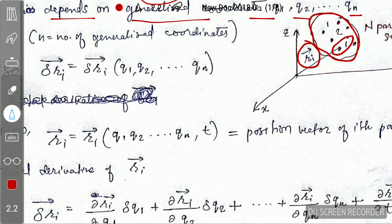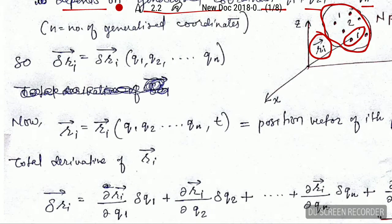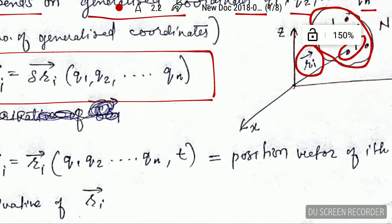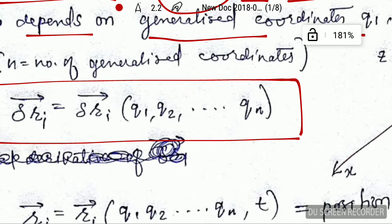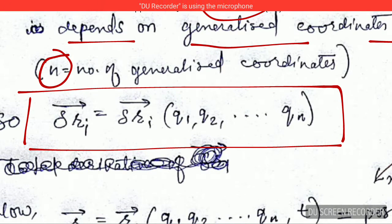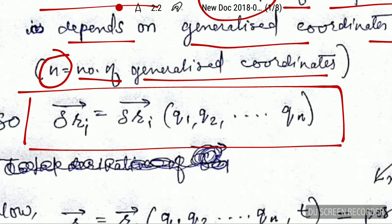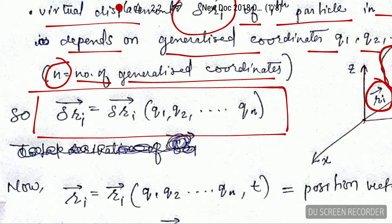Here, n is the number of generalized coordinates. We have seen how the virtual displacement depends on the generalized coordinates, and in my further lectures I will explain how we arrive at the expression for virtual displacement.